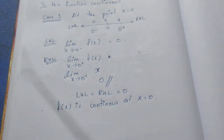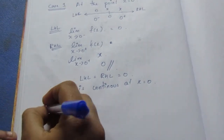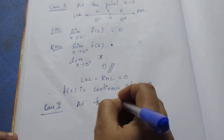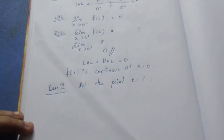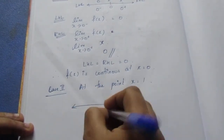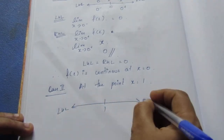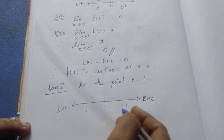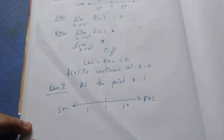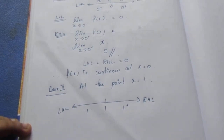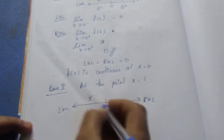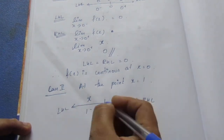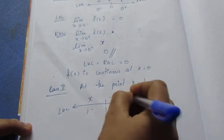Now let's look at case 2, at the point x equals 1. We use a number line: to the left of 1 we use x, to the right of 1 we use minus x squared plus 4x minus 2.